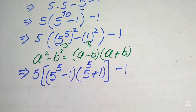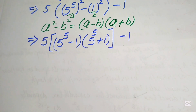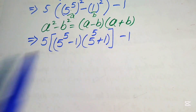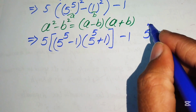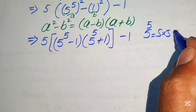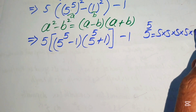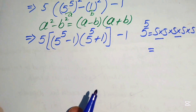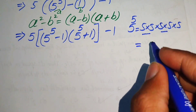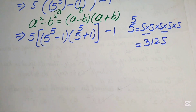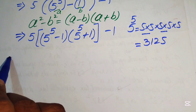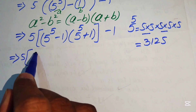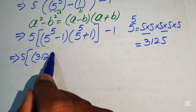Now we compute 5 to the power of 5. This means 5 multiplied by itself 5 times. Using the traditional method of multiplication, the product of these five numbers equals 3125.